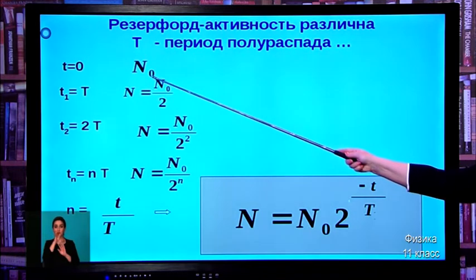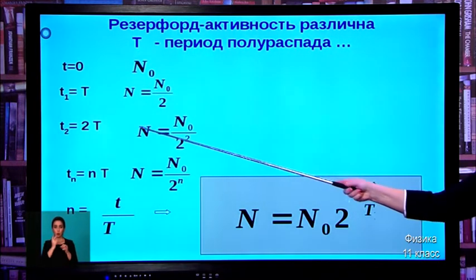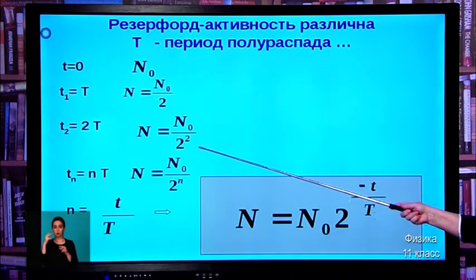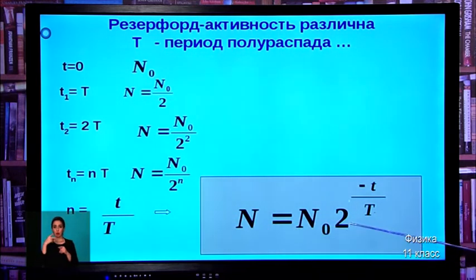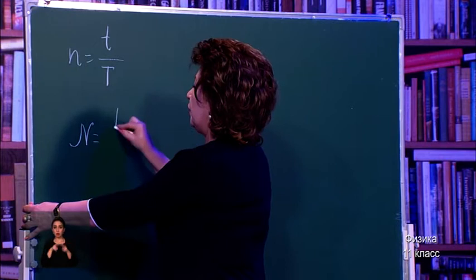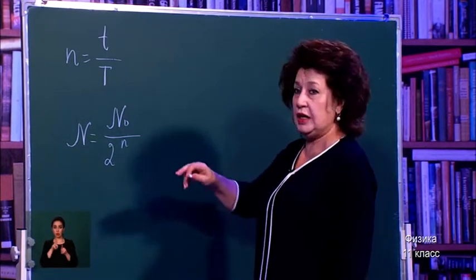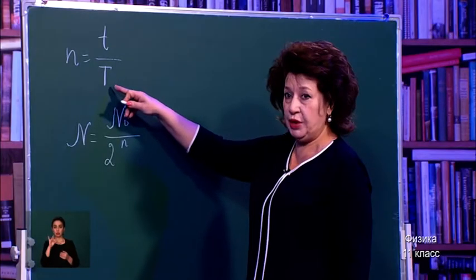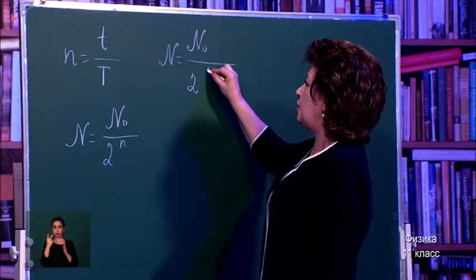This dependence can be written mathematically. At the initial moment of time — N₀. After one interval — N₀ divided by 2. After another doubled interval — N₀ divided by 2 squared, and so on. The pattern gives us N = N₀ × 2^n, where n is the ratio of the lifetime t (small t) to the half-life period T (large T), giving the formula: N = N₀ / 2^(t/T).